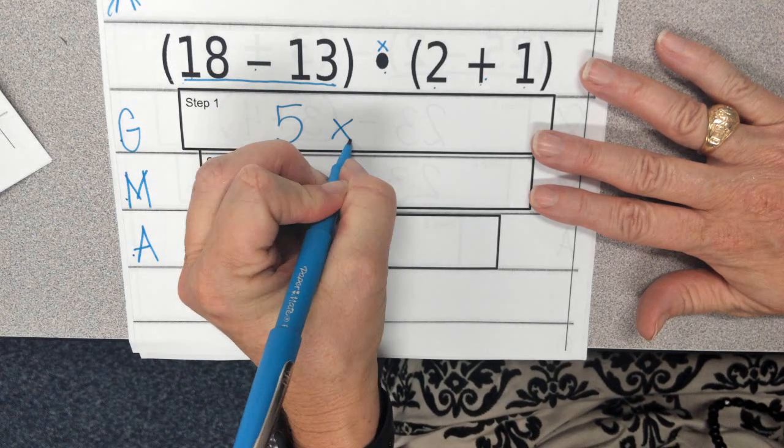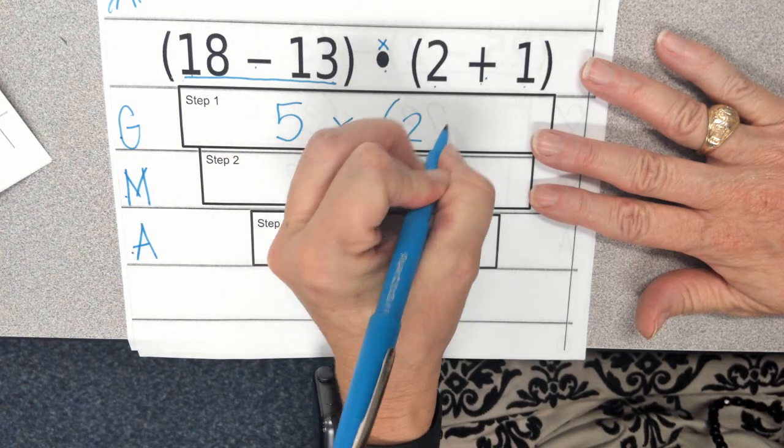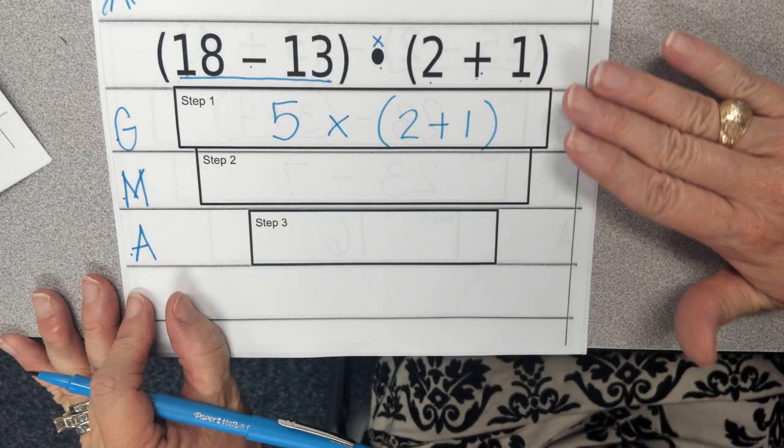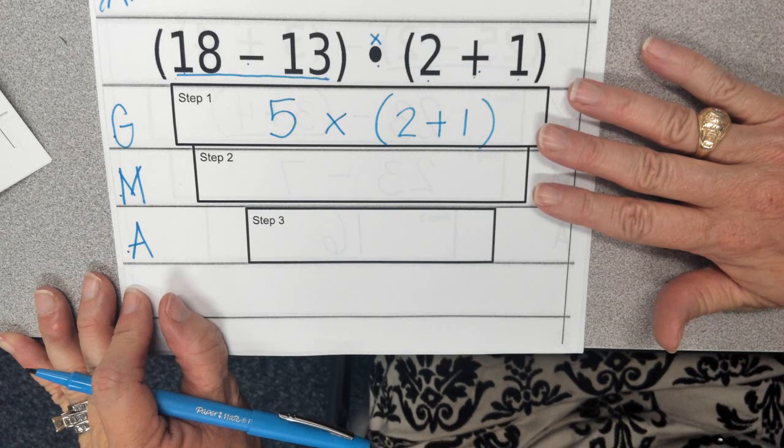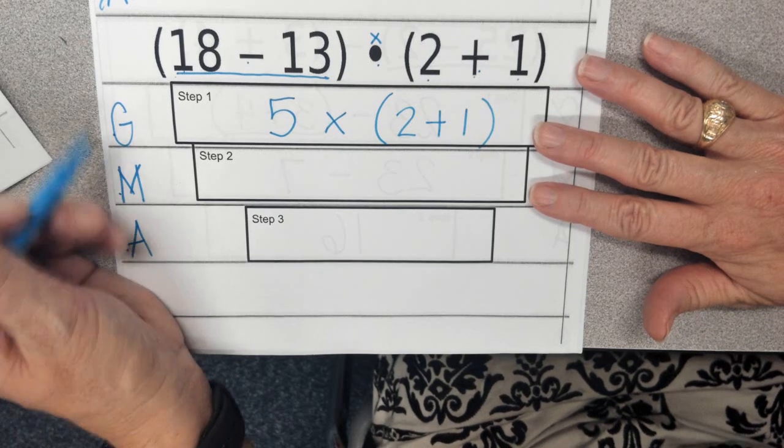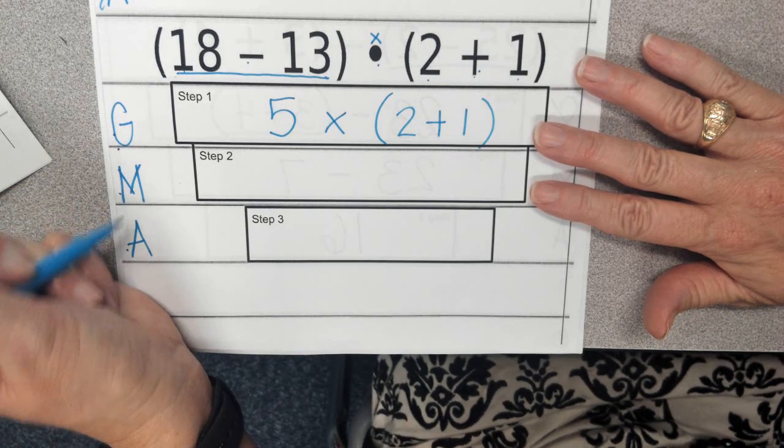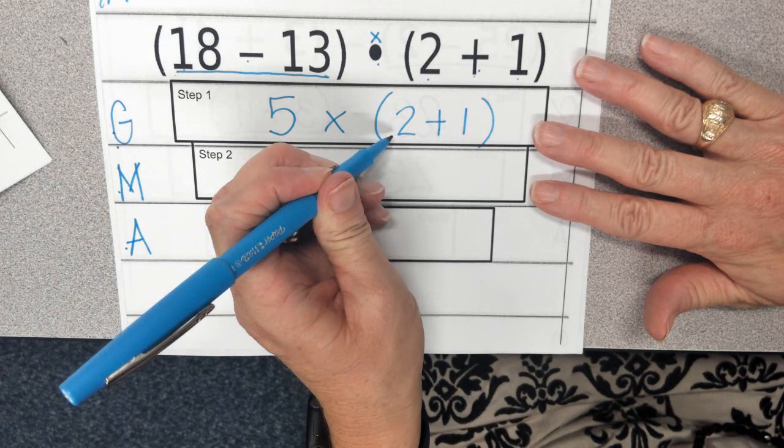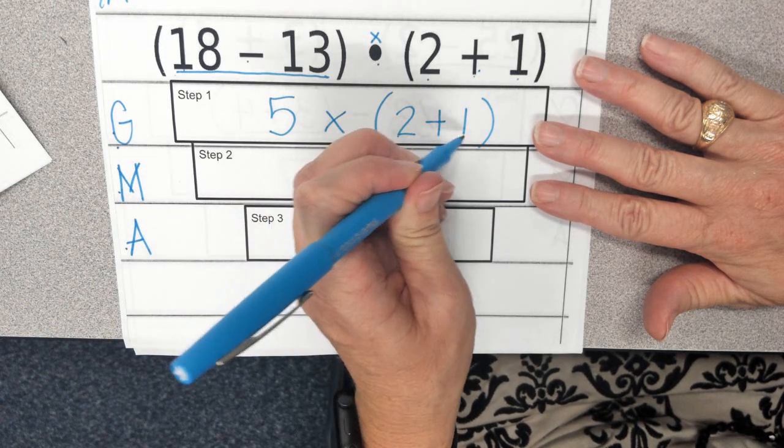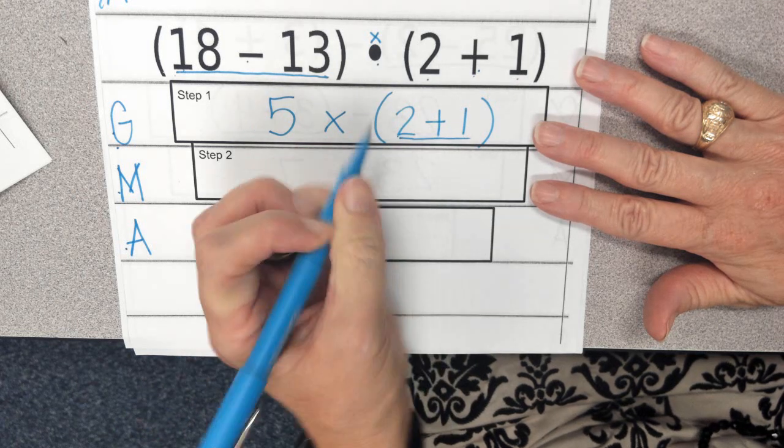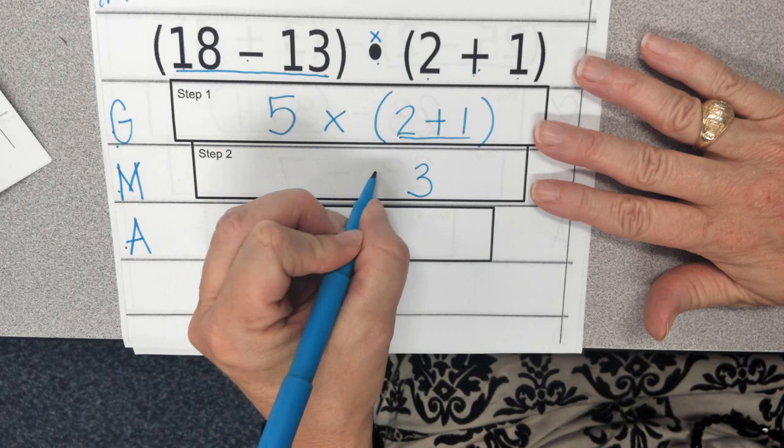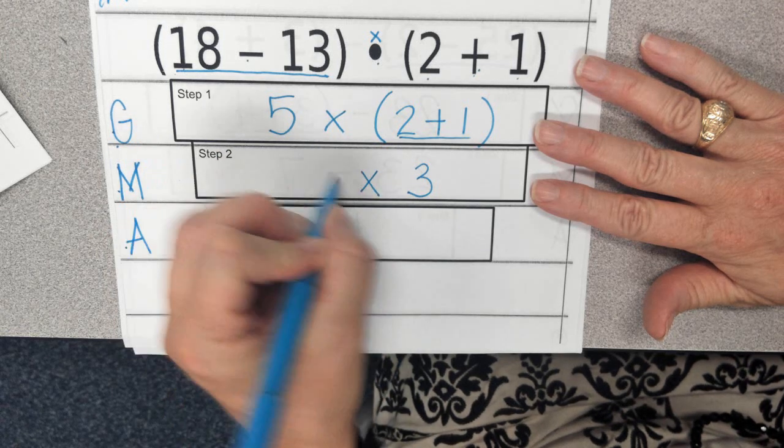So you can drop that down and drop everything into place. Remember, we do not change the order, or we will not get the correct answer. When I go back to my list of things to do, I still have some grouping symbols. So, I'm going to underline 2 plus 1. 2 plus 1 is the number 3. I'm going to drop my multiplication sign and the number 5.